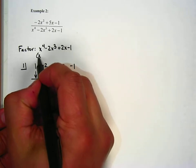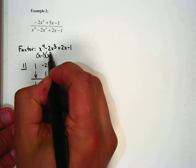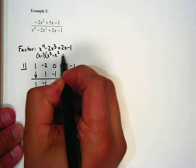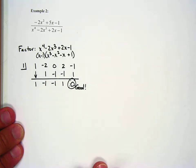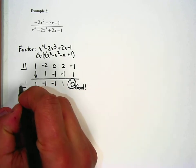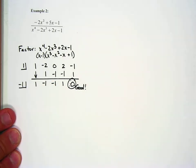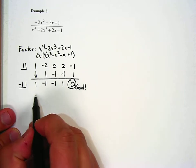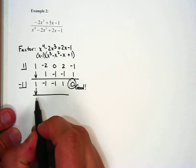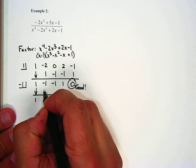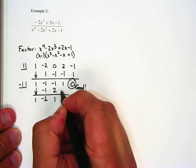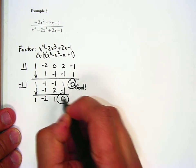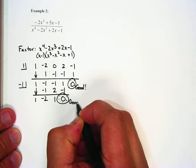That means this breaks up into x minus 1 times x cubed minus x squared minus x plus 1. We're going to break that down even more because negative 1 was also a zero from the graph. Performing synthetic division with negative 1, we again get a remainder of 0.